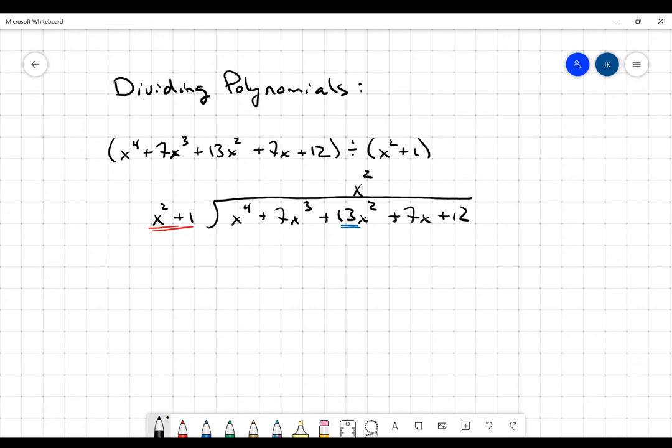And then I'm going to multiply that by my divisor. So x squared times x squared is x to the fourth. x squared times 1 is going to be x squared, positive x squared. And then just like regular long division from ages past, you're going to subtract. So x to the fourth minus x to the fourth is going to be 0. It goes away. That's what we wanted to do.